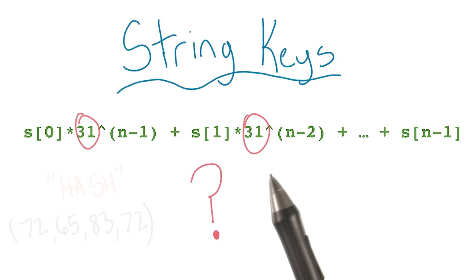Lastly, why is the number 31 used here? The earliest hash functions took advantage of some properties of the number 31, and research showed that it was a great choice for this kind of string hashing.